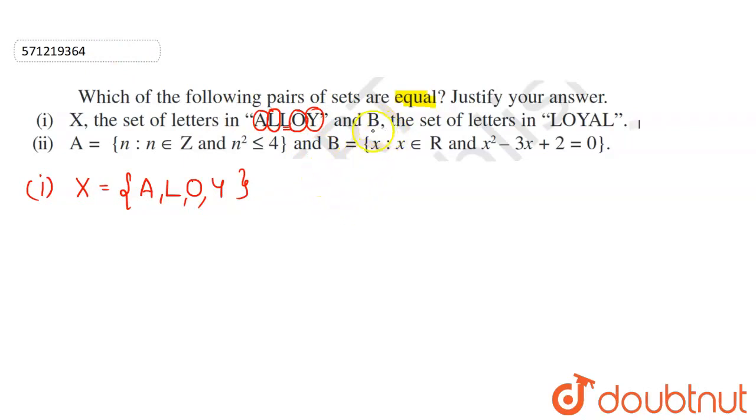Similarly, B will be a set that will be consisting of letters in the word LOYAL. So set B can be written as: L will come here, O will also come here, and Y will also come here, and A will also come here. As L is already here, so that means this L is not further repeated.